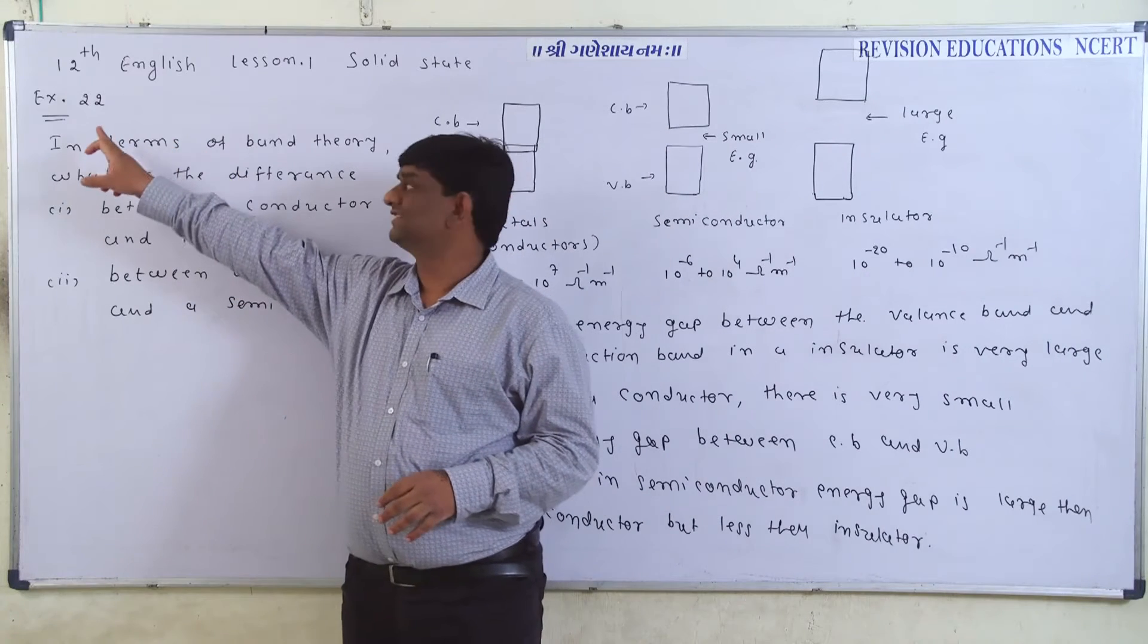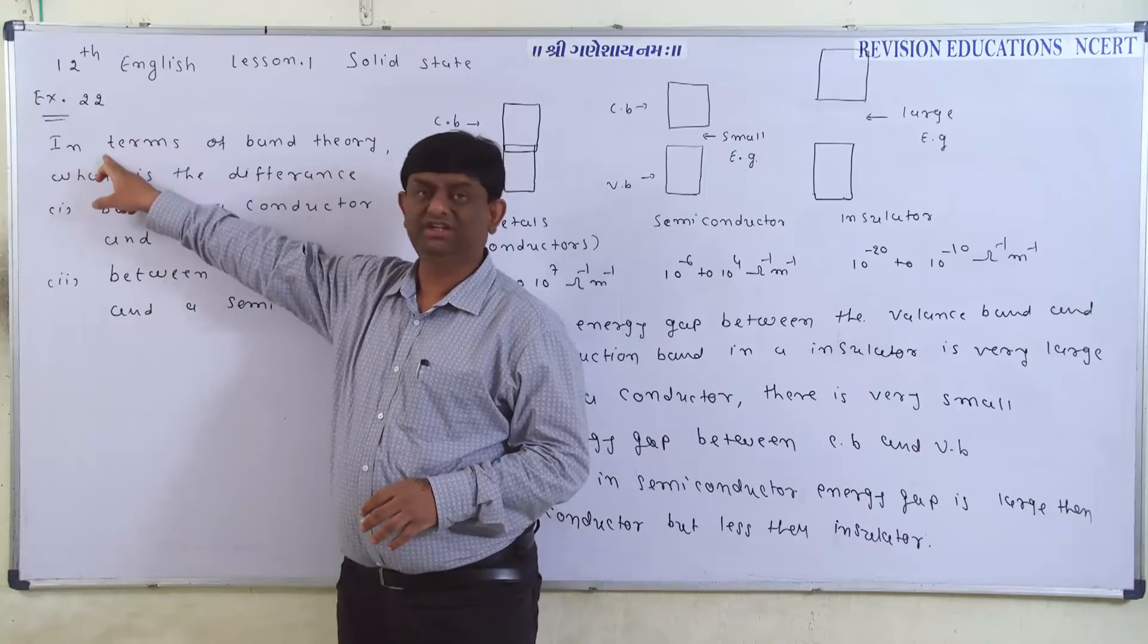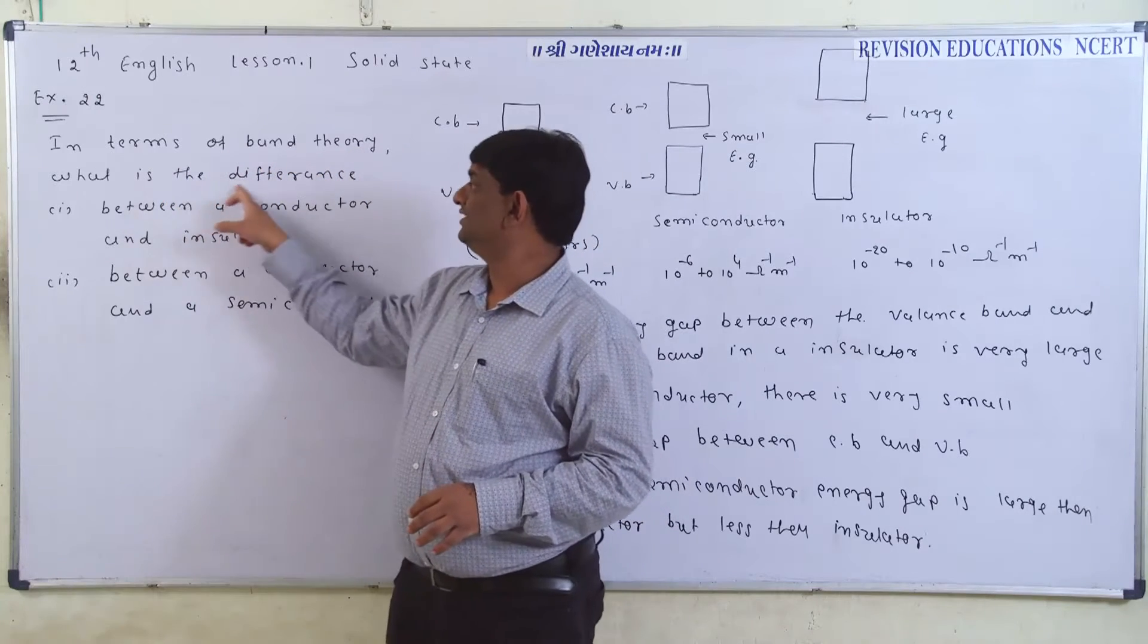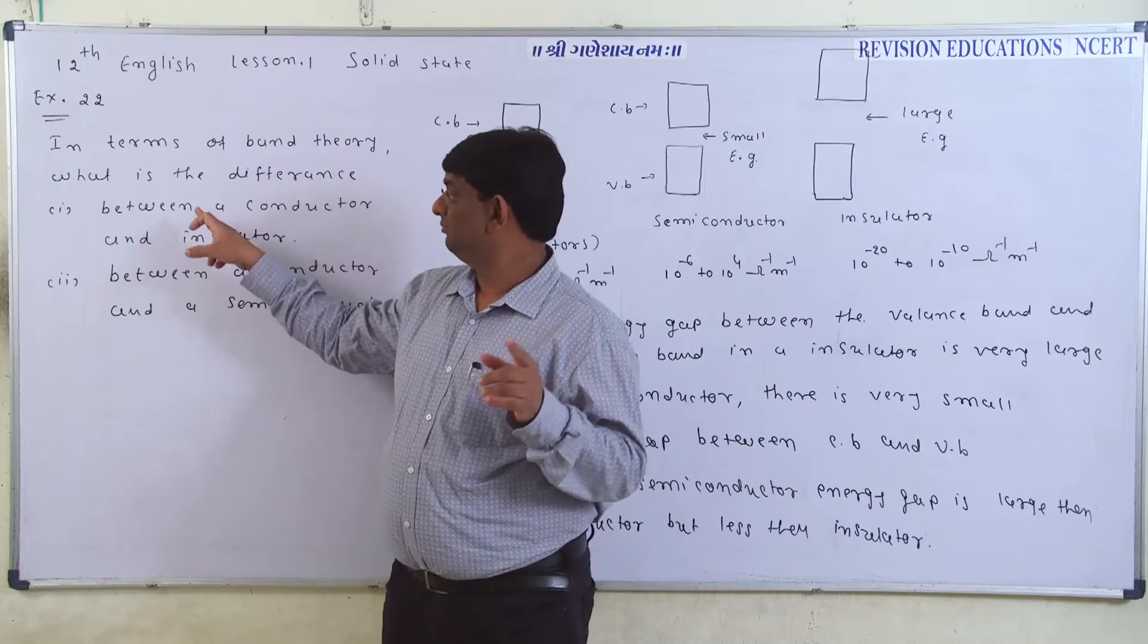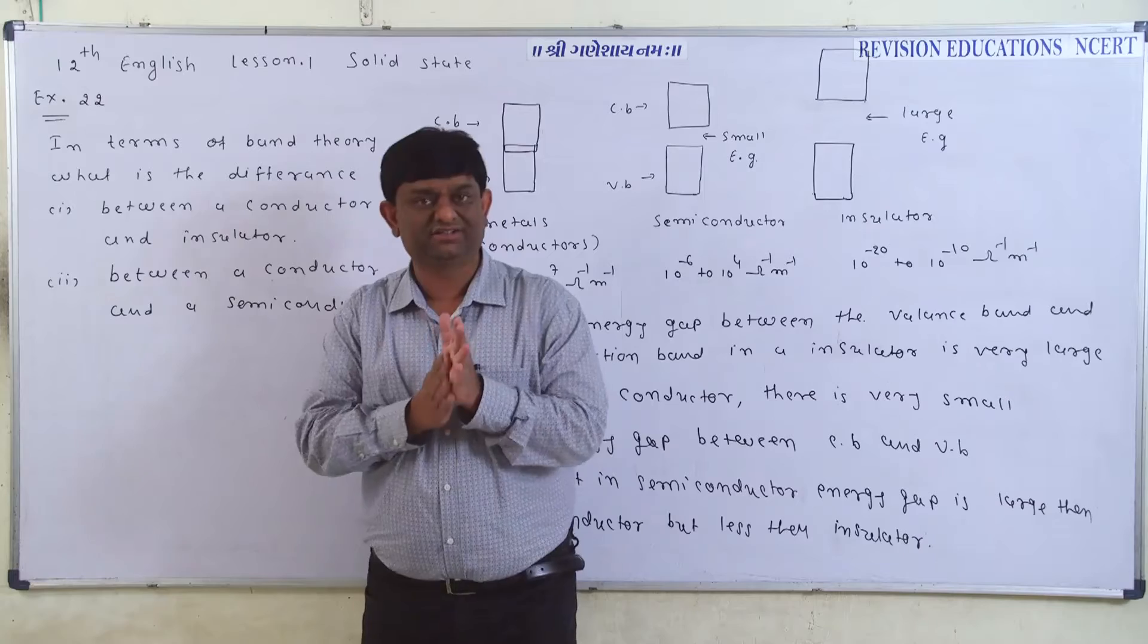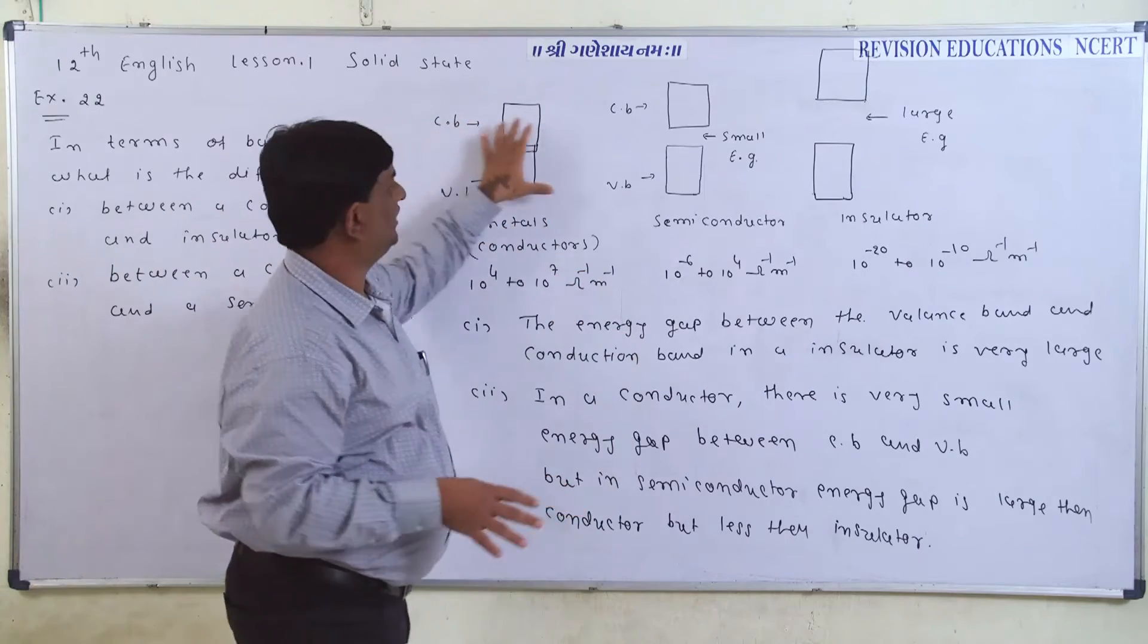Now students, we have to discuss exercise number 22 and the question is, in terms of band theorem, what is the difference between a conductor and an insulator and between a conductor and a semiconductor? Friends, we have to understand these three diagrams.